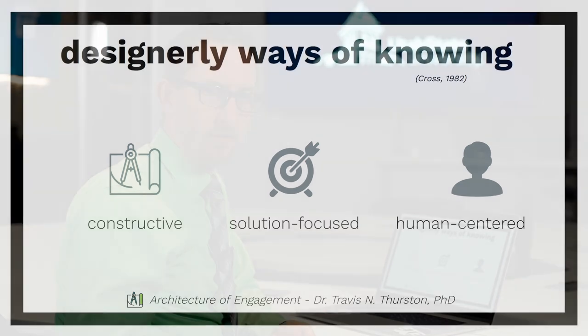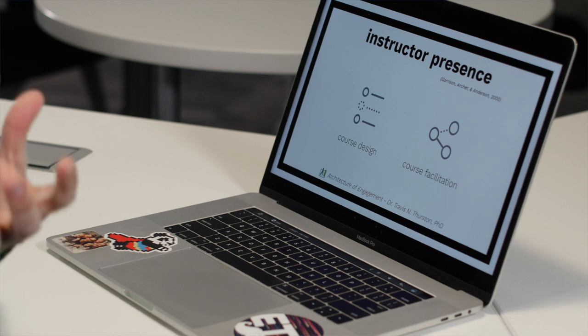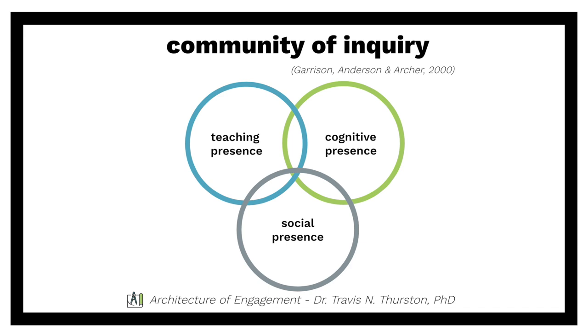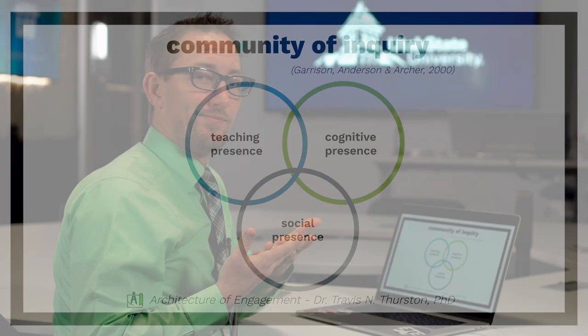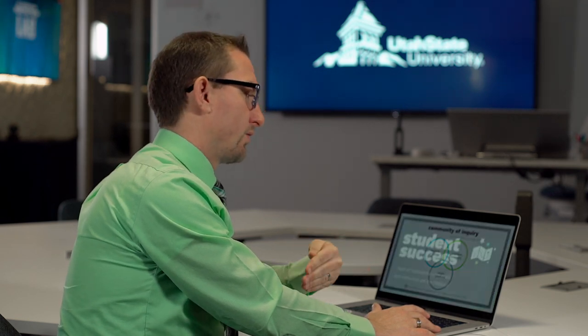And of course we want to be human-centered, so we want to make sure that the individuals who are participating are really going to benefit from the structure that we create. These two elements — course design and course facilitation — are wrapped up in the term instructor presence, which comes from the literature on the community of inquiry framework. The community of inquiry framework is a way for us to operationalize ideas from self-determination theory directly into the classroom, or in this case into the way that we facilitate educational development. These are referred to by the authors as teaching presence, cognitive presence, and social presence.